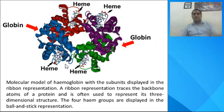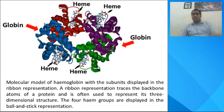This molecular model of hemoglobin shows the proteins displayed in the form of ribbons. There are four colors — blue, red, purple, and green — that represent the globin proteins. You can also see the embedded heme units here: four heme units represented by four structures within the model.